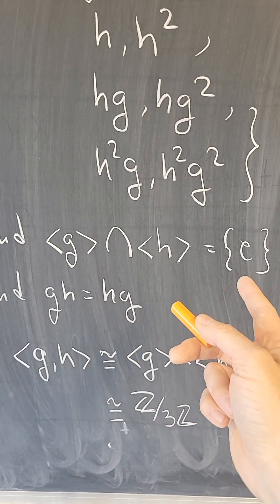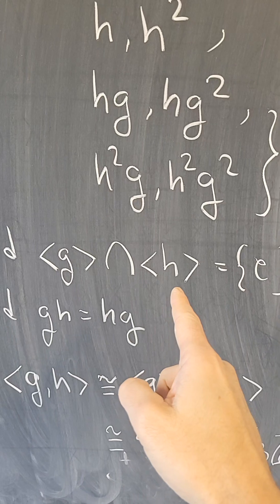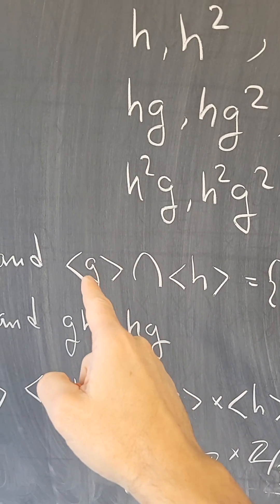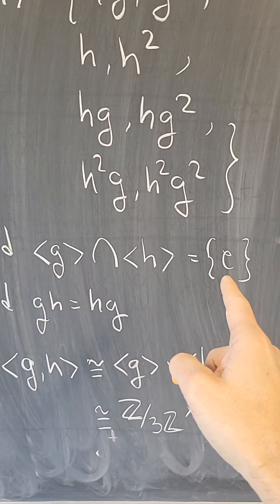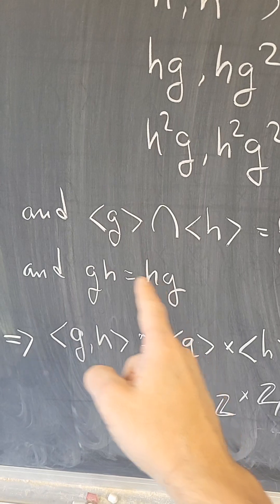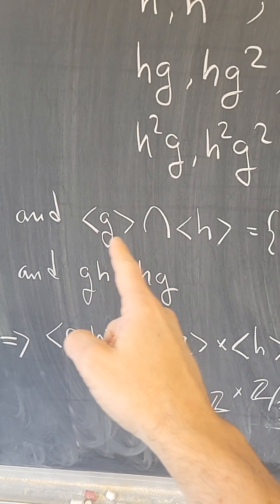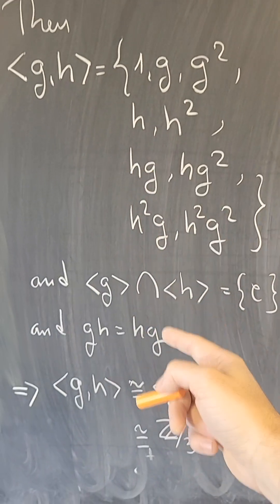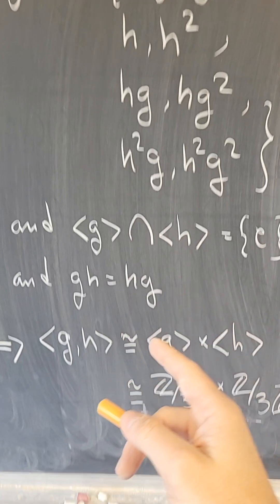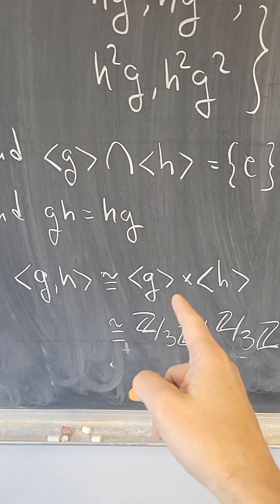The only intersection of such groups, because these would have order 3, this is 1, g, g squared, and 1, h, h squared, so the intersection is trivial. And the group is abelian, so all the elements in these groups commute, and those are precisely the conditions to prove that something is an internal direct product.